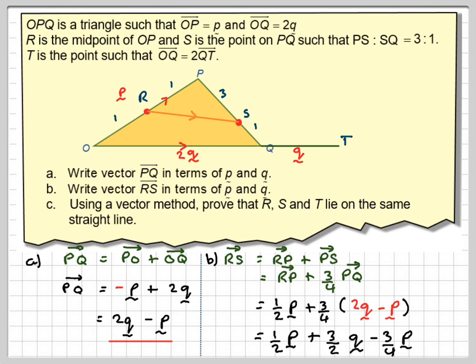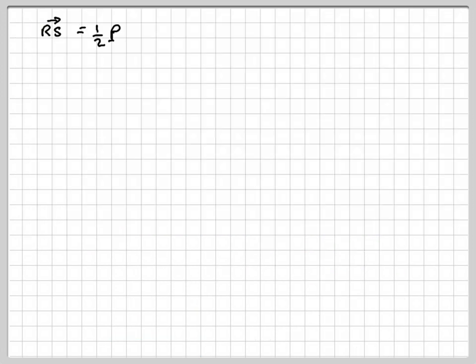All right, before we go on, just remember what we've got to do is, we've got to use a vector method to prove that R, S, T lie on the straight line. And part of this is to find the vector RS, which we're in the process of finding. Now, we would need to collect together like terms. So just use the fraction button on your calculator. That's going to give me 3 over 2 q, then a half minus 3 quarters is minus a quarter p.